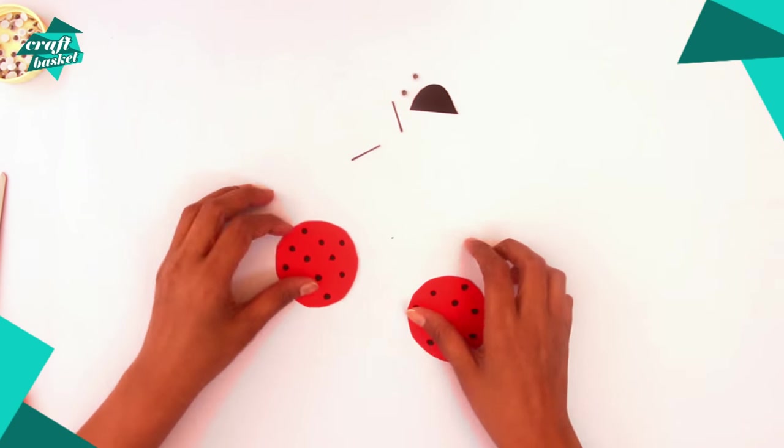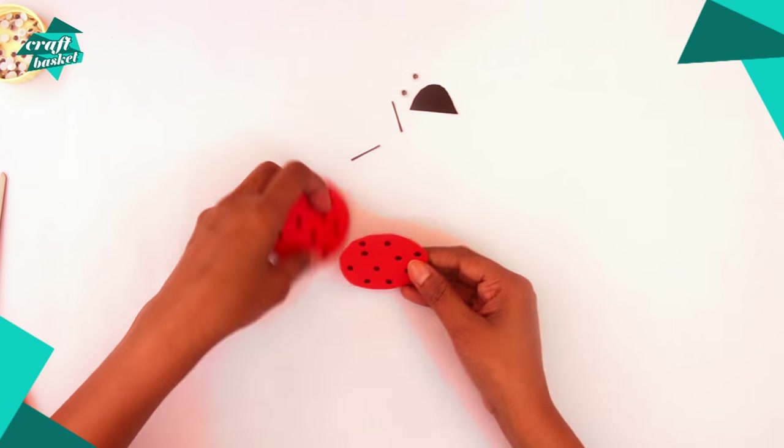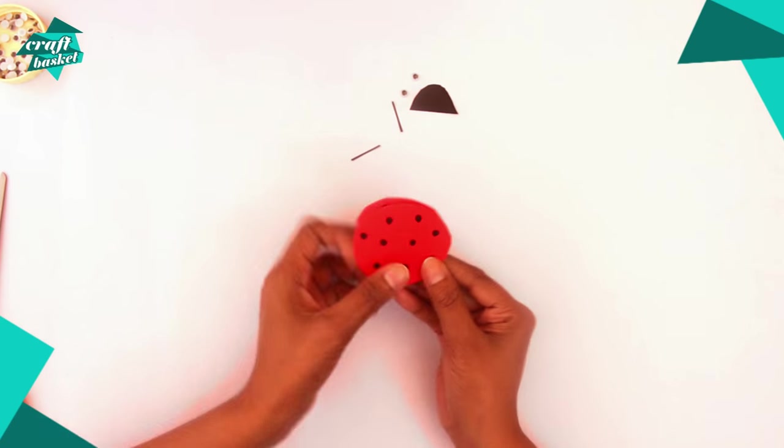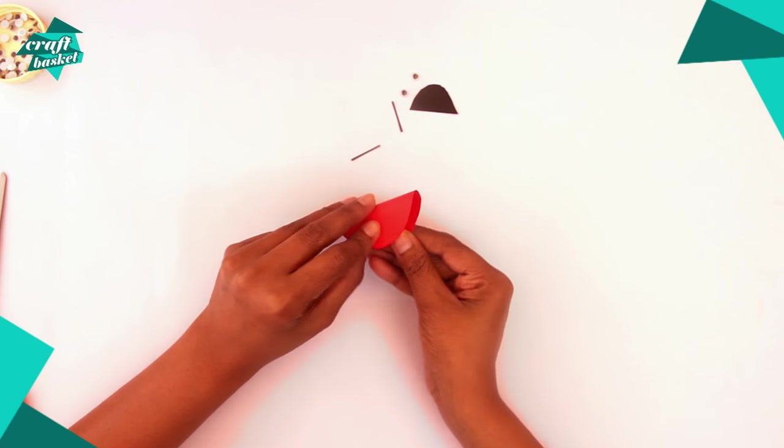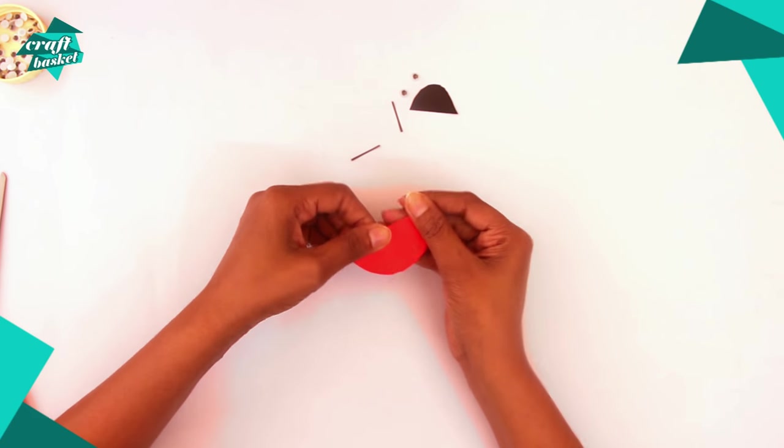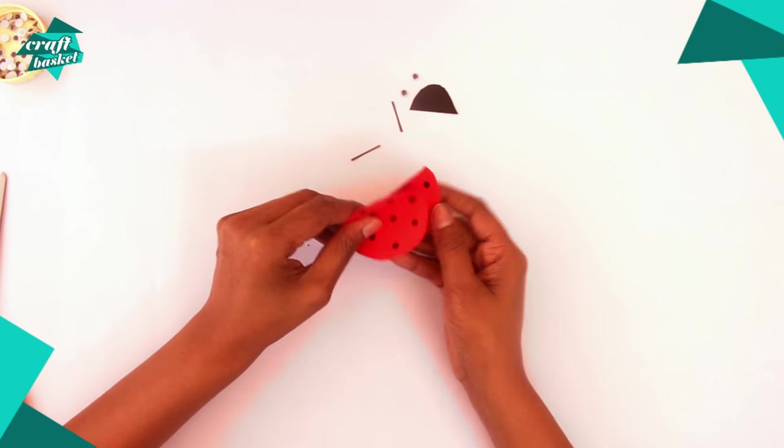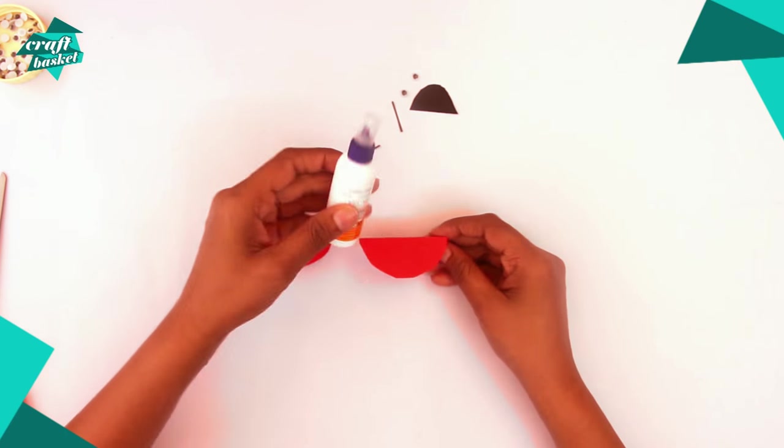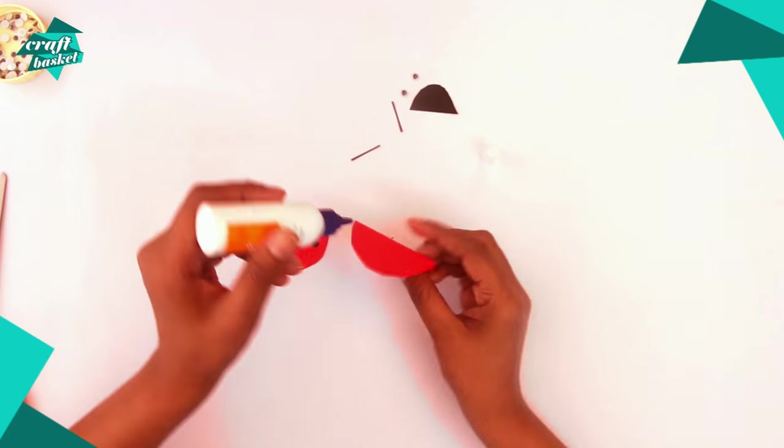Next, take both circles and fold them in half. Use your glue to stick them both together like this.